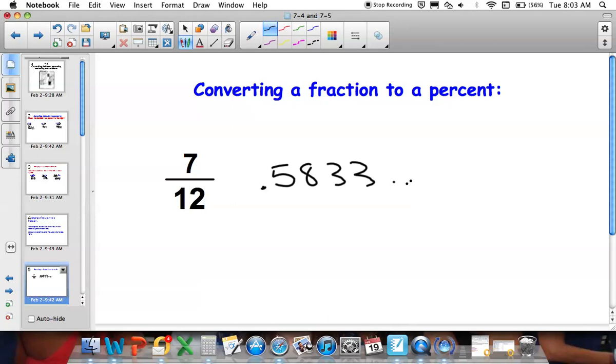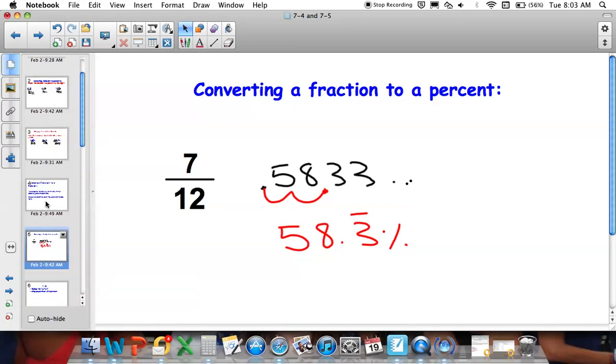So, now we're going to convert this decimal to a percent. And we do that by moving this decimal place over twice to the right. So, this is the same as 58.3 percent. Now, you could have just rounded it. You could have rounded it to a different place. I don't really care in this case as long as it's close.